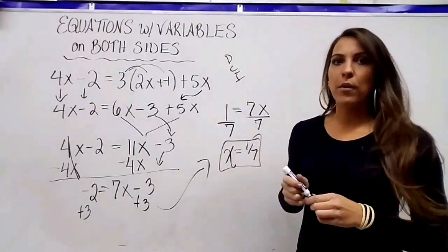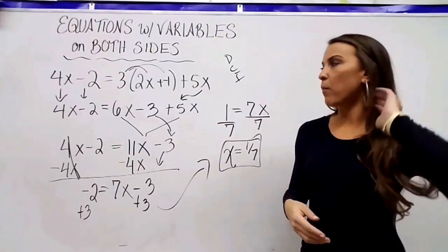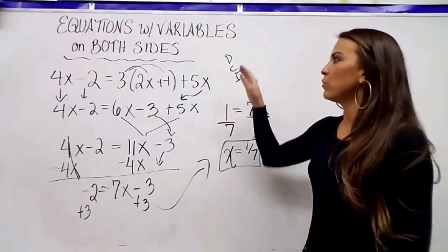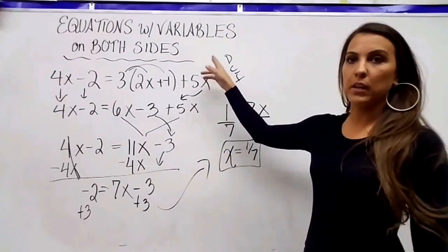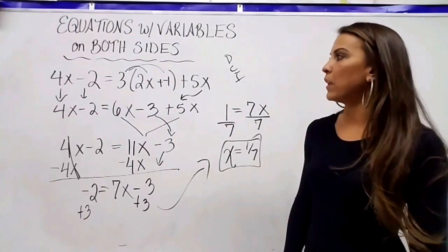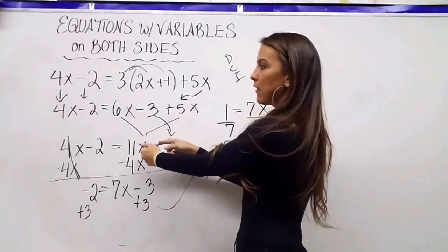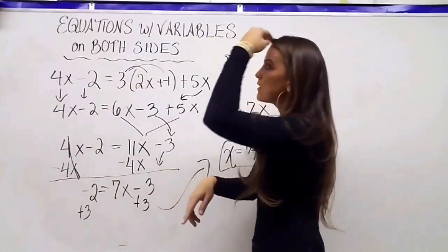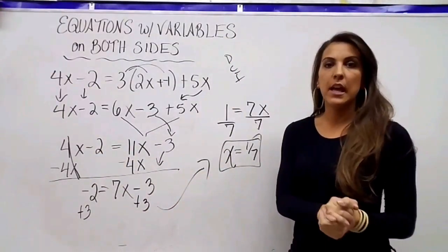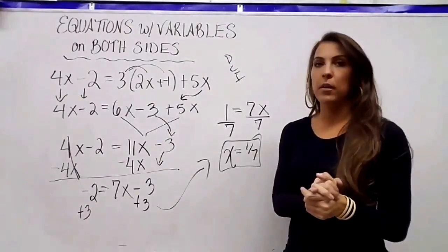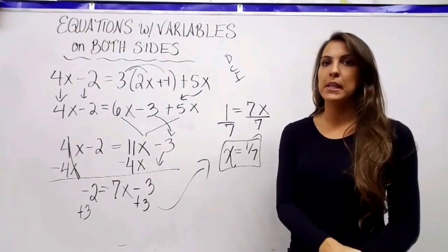So again, DCI is not a math law you have to follow — it's just three letters you can use as an organizational tool. There might not always be distributing, there might not always be combining, but it's one method you could follow: if like terms are on the same side, combine them; if they're on opposite sides, use inverse operations.